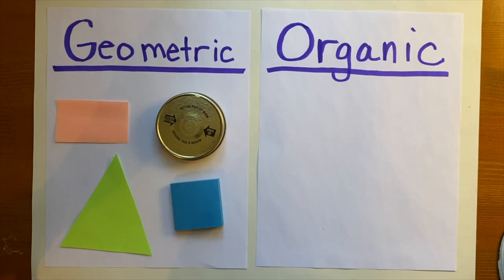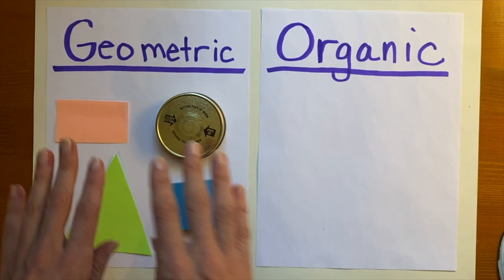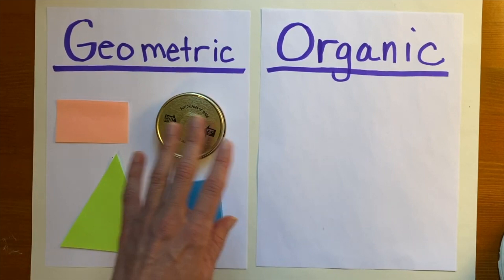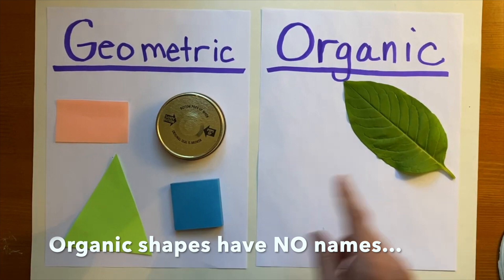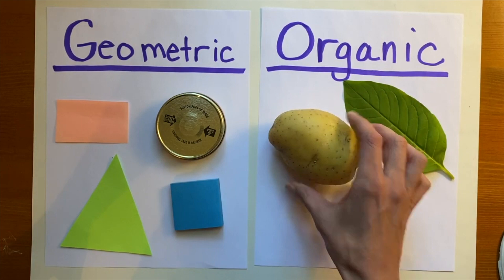The other family of shapes — my favorite — are called organic shapes. Have you ever heard the word 'organic'? The word organic reminds me of things that are found in nature, or things that are natural. That's one way you can remember it. Organic shapes are different from geometric shapes because they're not perfect — they're things found in nature, kind of like this leaf here.